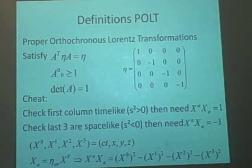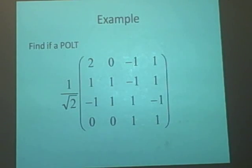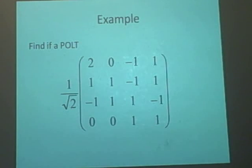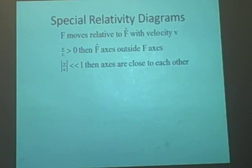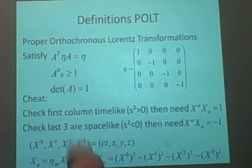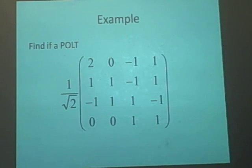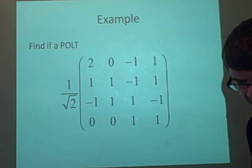Next we check that the first entry A^0_0 is greater than or equal to 1. That's 2/√2 = √2, which is approximately 1.4, so that's fine. And finally, the determinant is equal to 1. So it is a proper orthochronous Lorentz transformation.